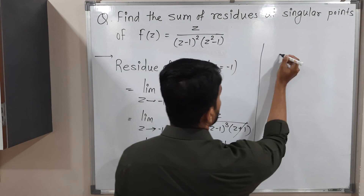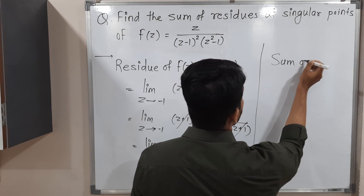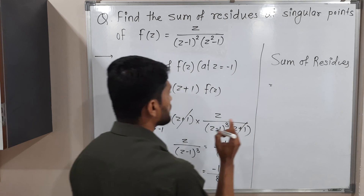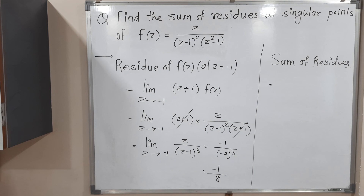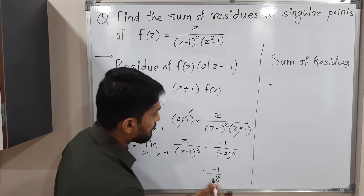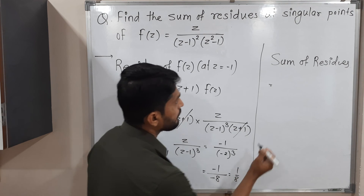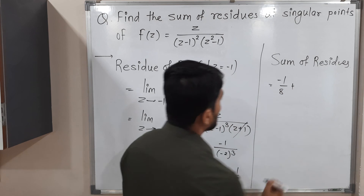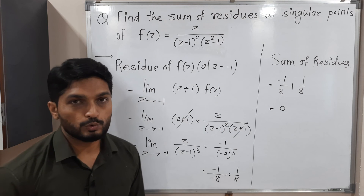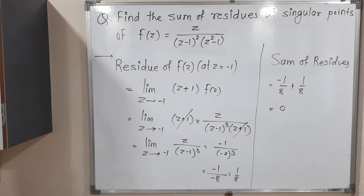Now we find the sum of residues. The first residue at z = 1 was minus 1 upon 8, and the second residue at z = -1 is 1 upon 8. Their sum is minus 1/8 plus 1/8 = 0. So the required sum of residues is 0. Thank you, see you in the next video.